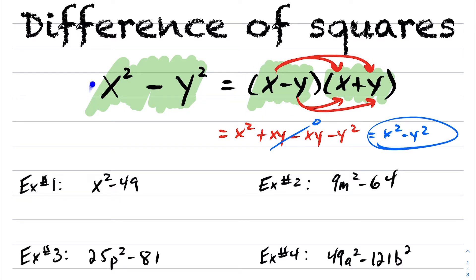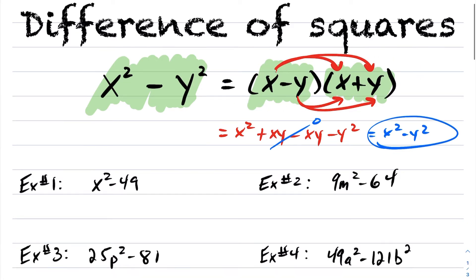Now what's important to note here is the x is just a placeholder. You can have multiple terms in here. The whole idea here is it's really anything to the power of 2 minus anything else to the power of 2 will factor into this expression here. Okay, so let's look at some examples.